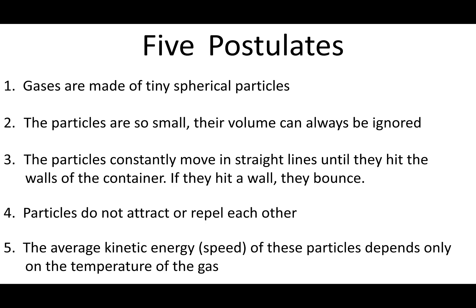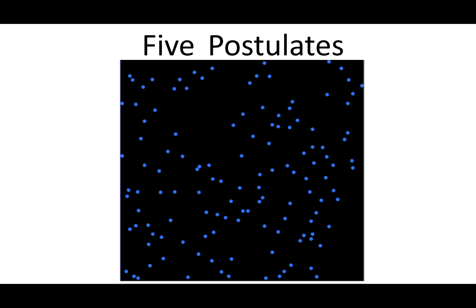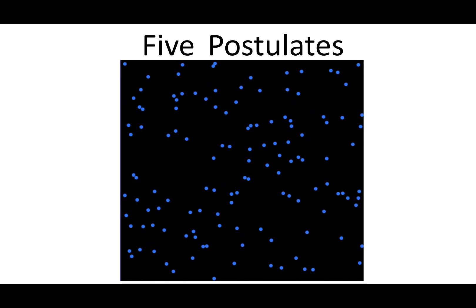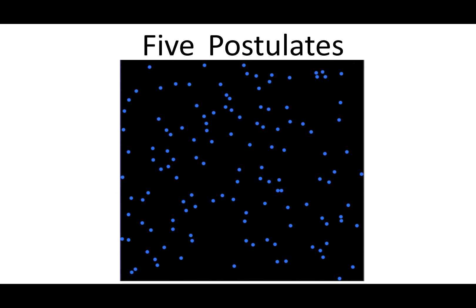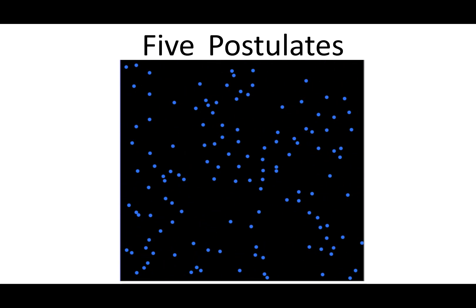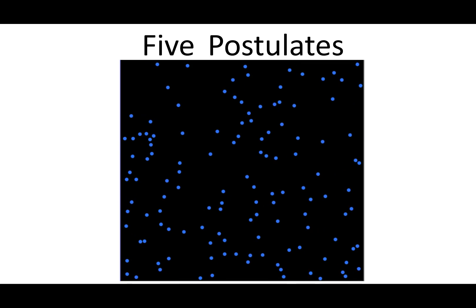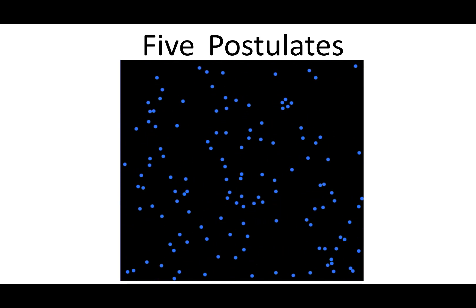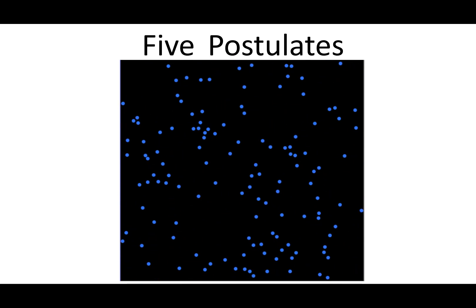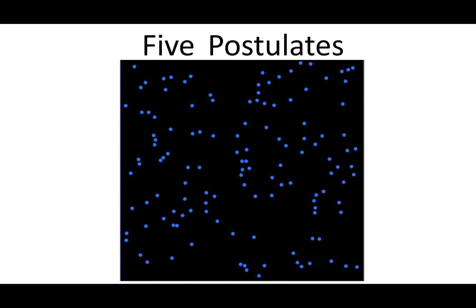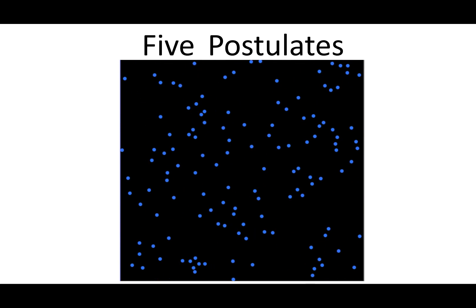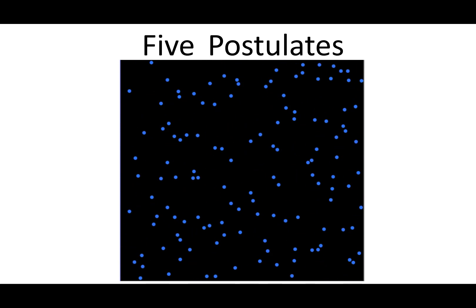But you shouldn't think of it as five different sentences. It's really a picture. The five postulates of kinetic molecular theory imply that gases and the molecules inside gases move around like this. And that's what we're going to be exploring further in this unit.